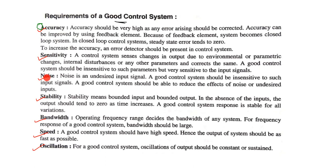Third, noise — noise is an undesired input signal. A good control system should be insensitive to such undesired input signals and should be able to reduce the effect of noise.